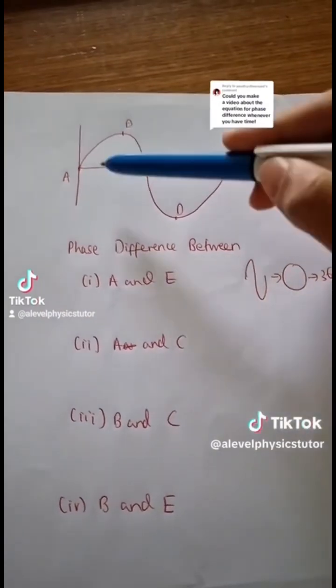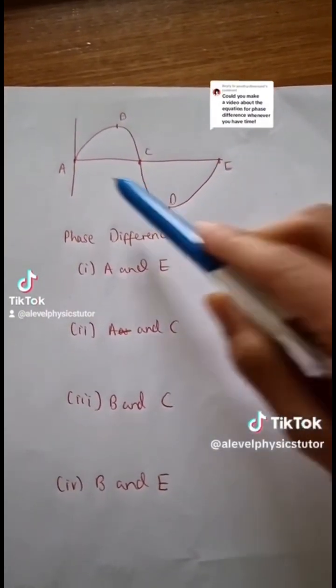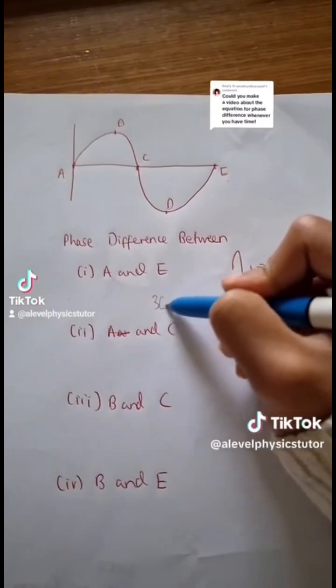For example, between A and E, there's one whole wavelength of difference, meaning the phase difference between them corresponds to 360 degrees.